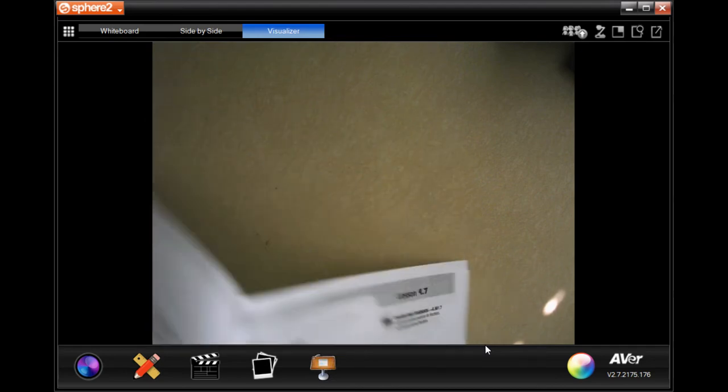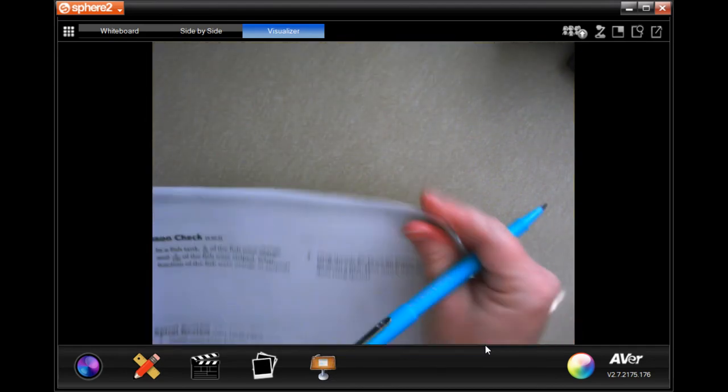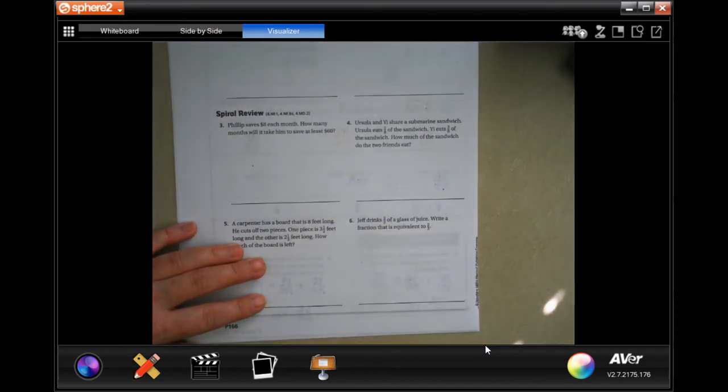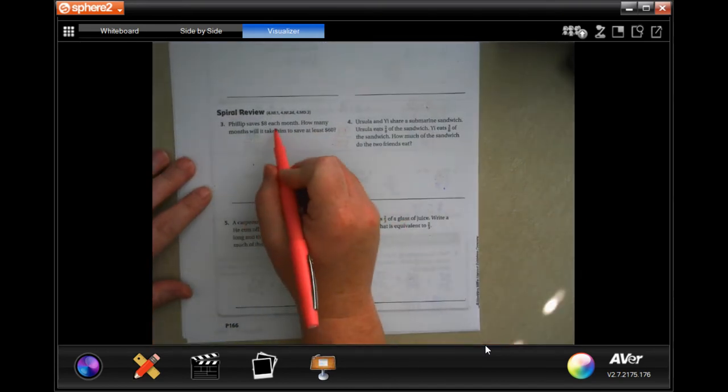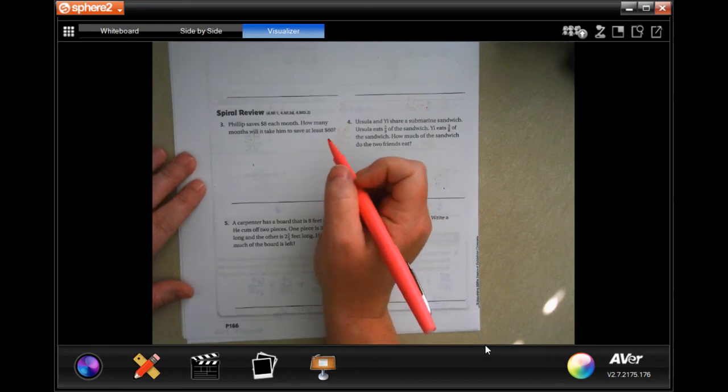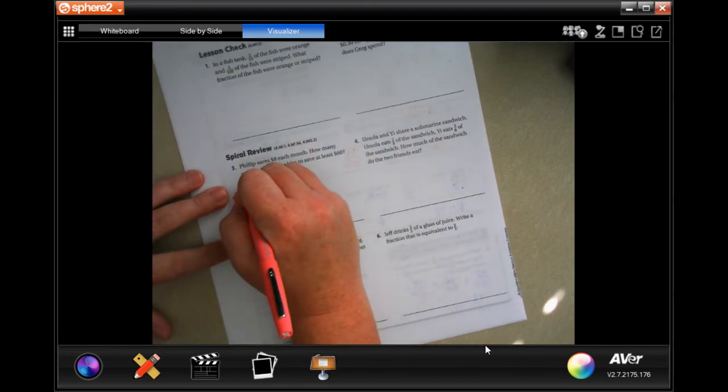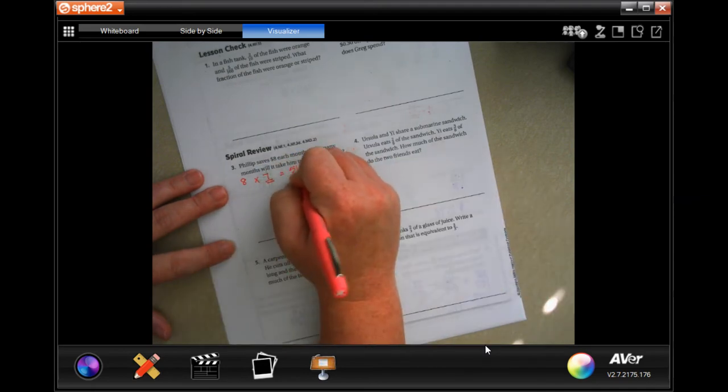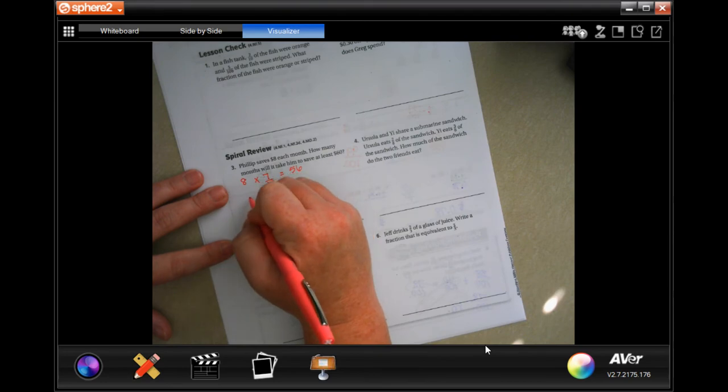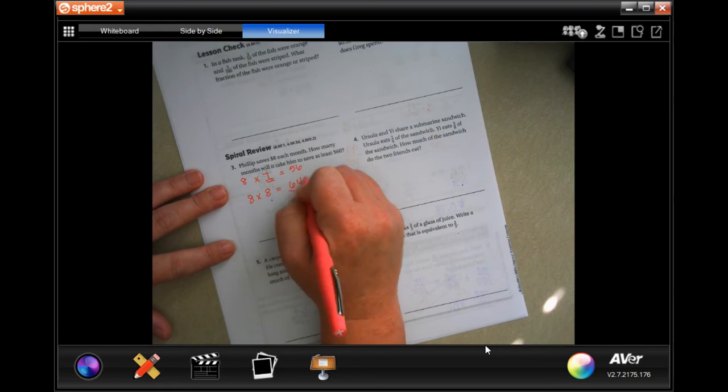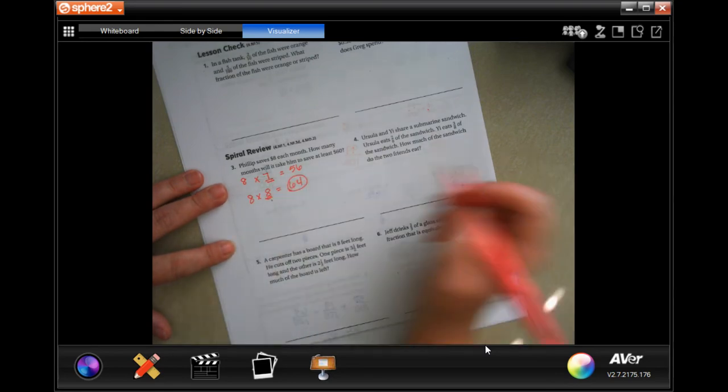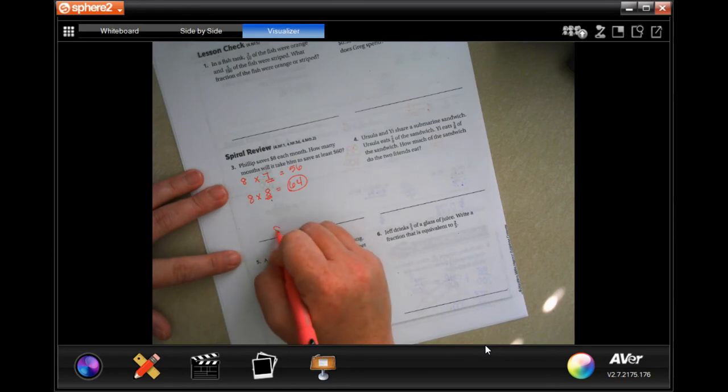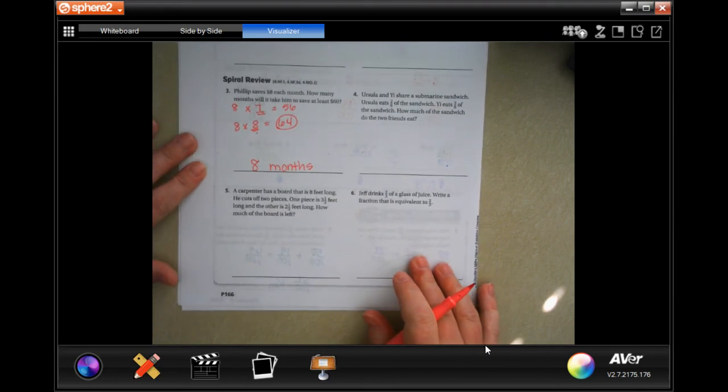We are going to go on to the back where you guys are going to do the lesson check just like always. We're going to go down to this power of you guys. Well, it saves $8 each month. How many months will it take him to save at least $60? Well, 8 times 7 is 56. So, we're going to have to add on and do 8 times 8 is 64. Well, this is the first month that it's $60 or more. So, 8 months.